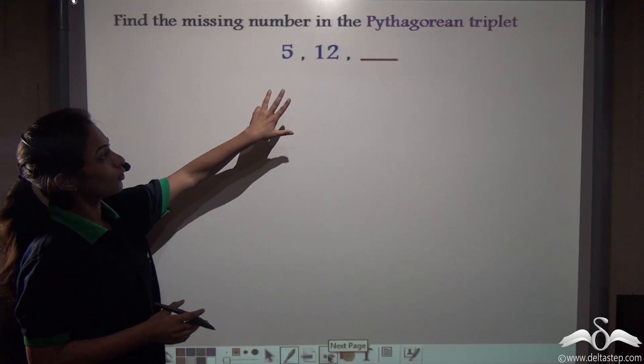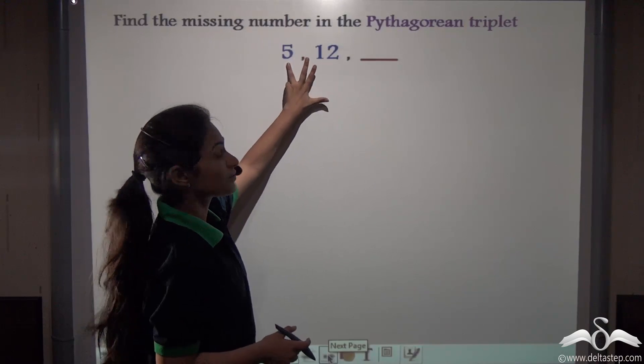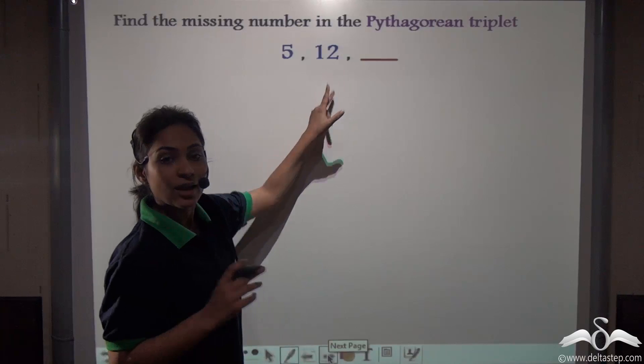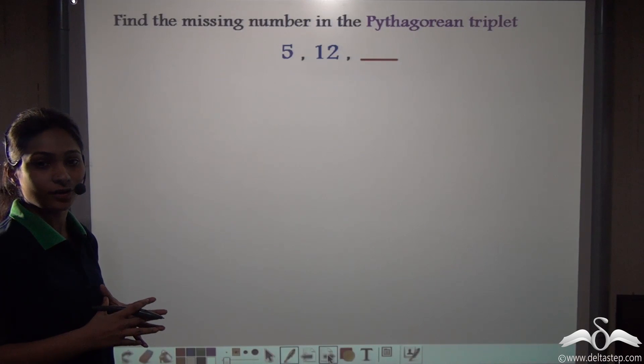Now, here we have given you this triplet but one number is missing. Say one number is 5, another is 12, and you have to find the third one. So find out the missing number in this Pythagorean triplet.